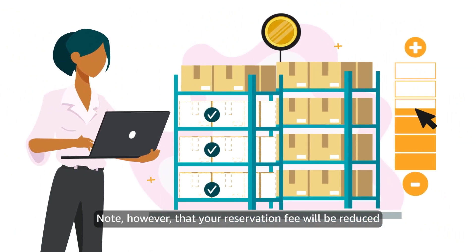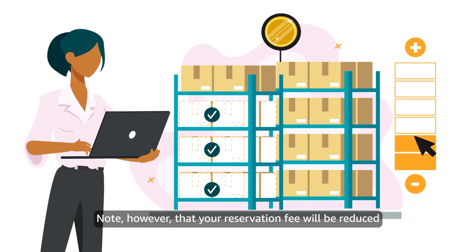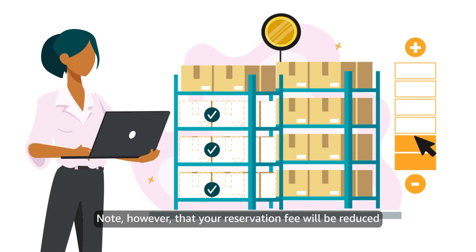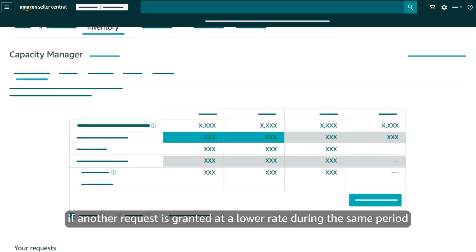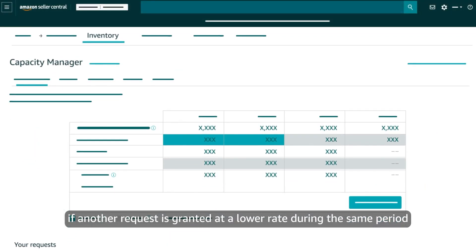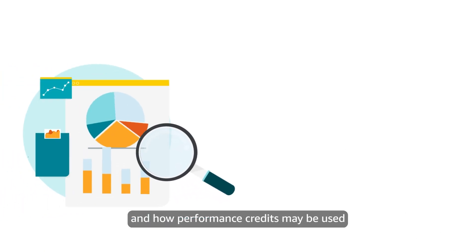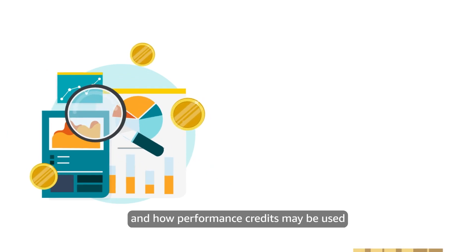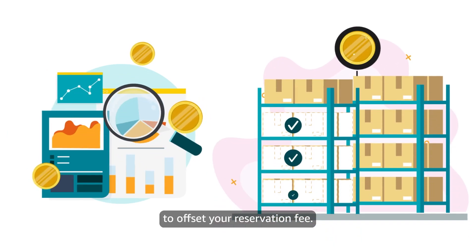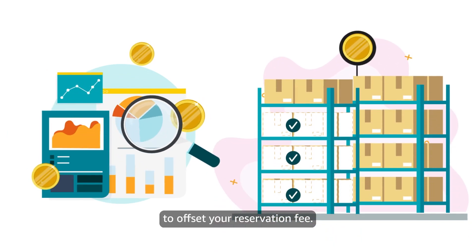Note however that your reservation fee will be reduced if another request is granted at a lower rate during the same period. Let's cover how to submit a request and how performance credits may be used to offset your reservation fee.